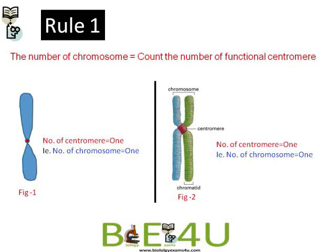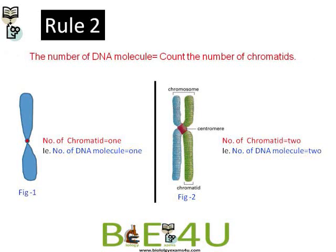Rule 2: to count the number of DNA molecules, you count the number of chromatids. In figure 1, there is a single chromatid, so the number of DNA molecules is 1. In figure 2, after S phase, a chromosome has two chromatids held together at the centromere. The number of chromatids is 2, therefore the number of DNA molecules is also 2.